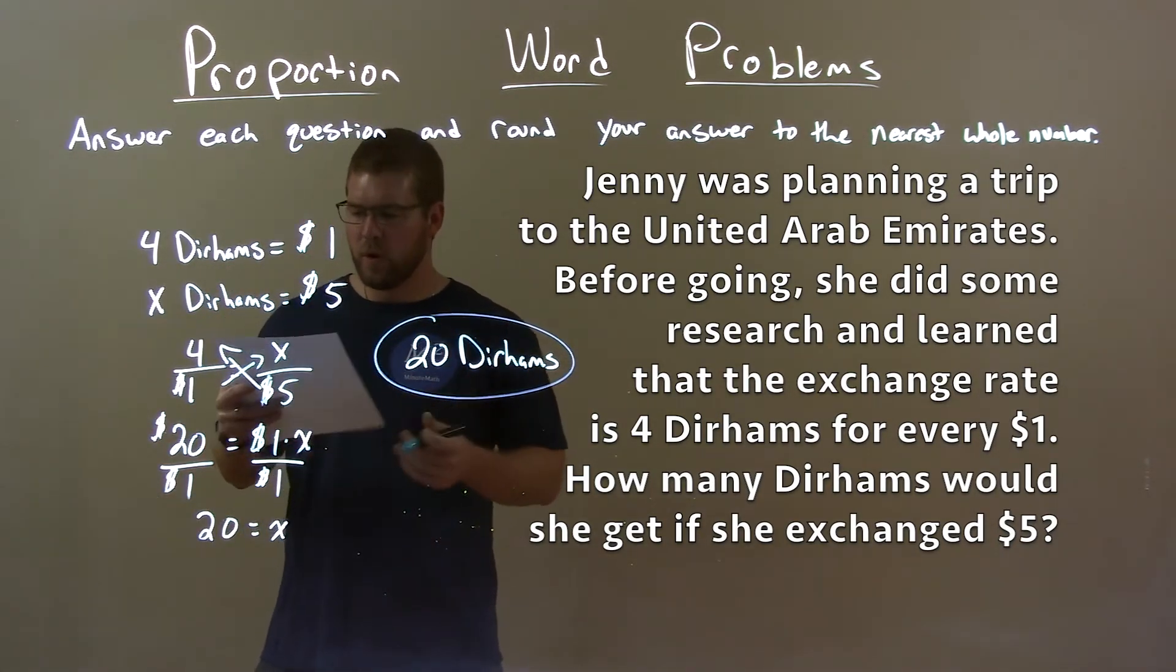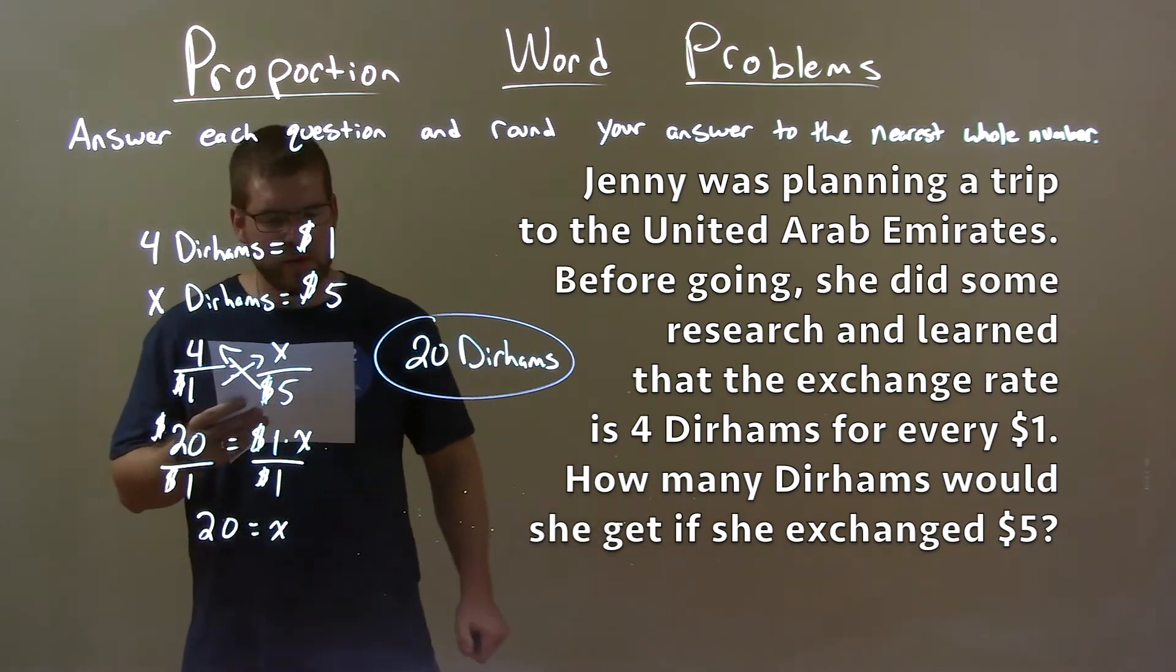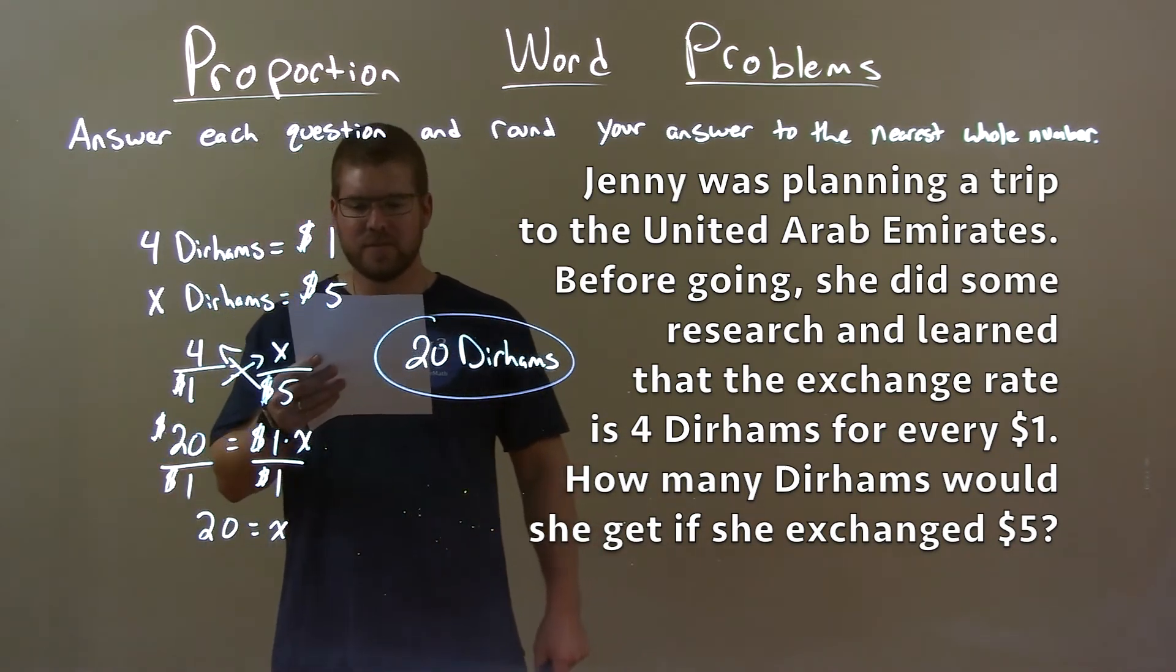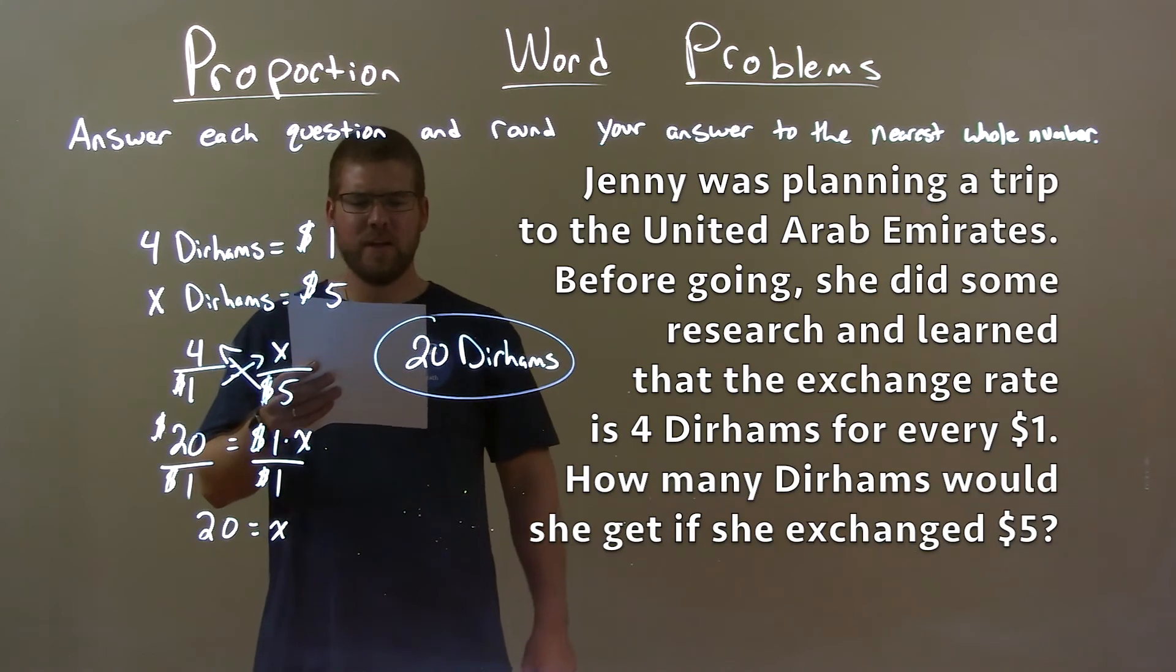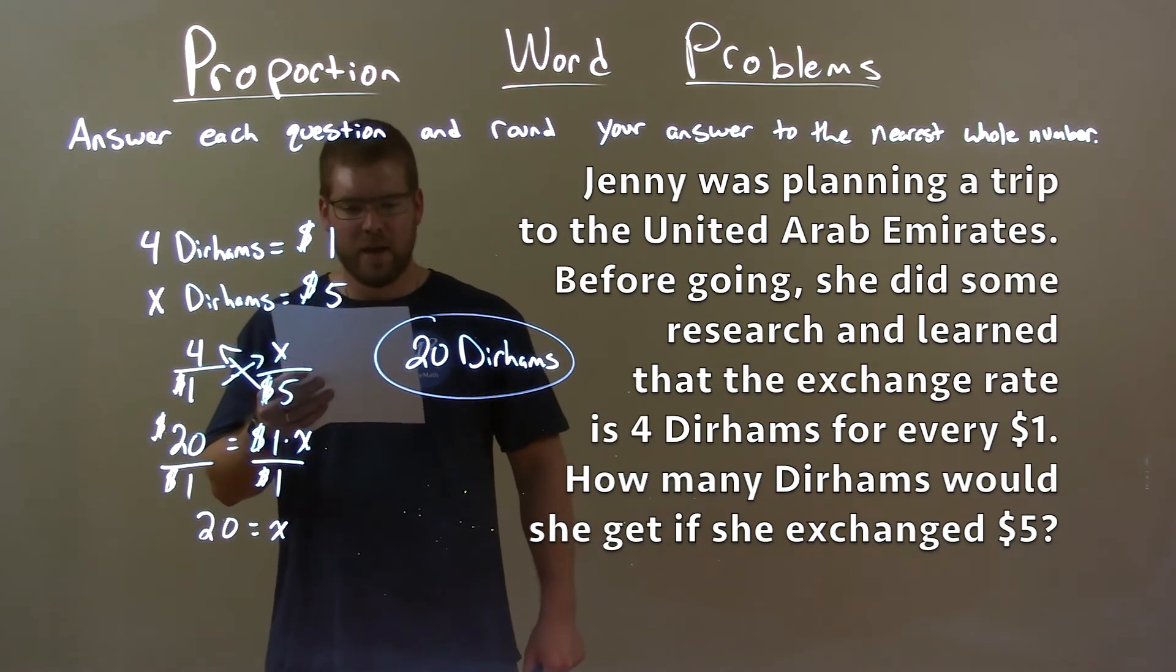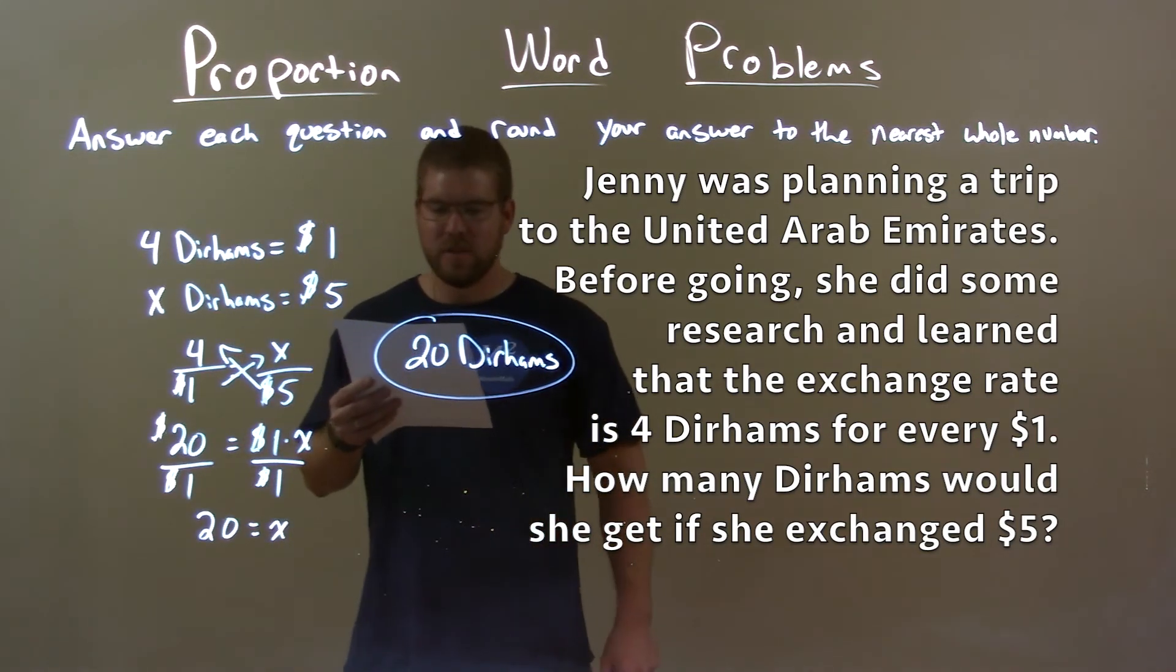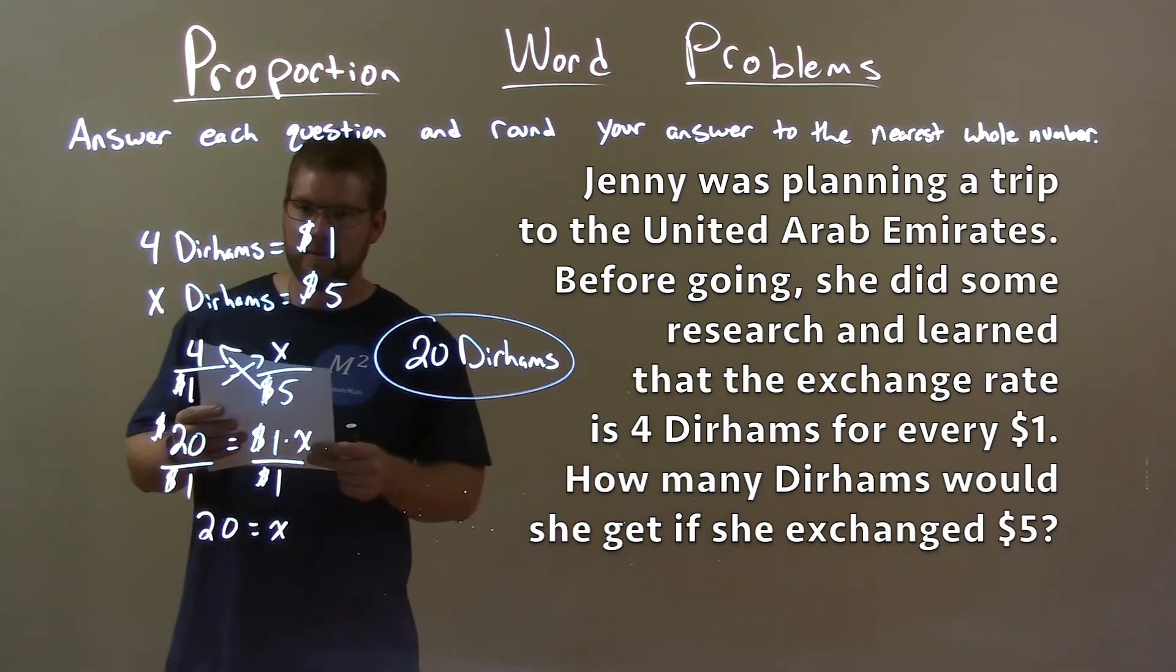Quick recap. If we're given the word problem, Jenny was planning a trip to the United Arab Emirates. Before going, she did some research and learned that the exchange rate is 4 dirhams for every $1. How many dirhams would she get if she exchanged $5? Well,